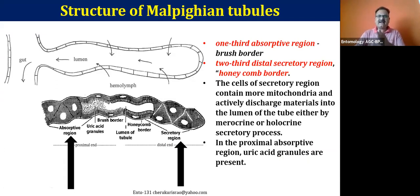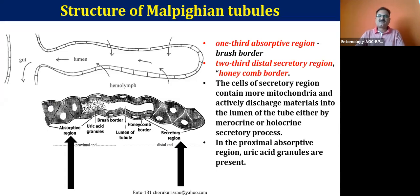We can divide the Malpighian tubules into two regions: the distal secretory region and the proximal absorptive region. The absorptive region is about one-third of the total length and has a brush border. You can see uric acid granules here. The distal part is called the secretory region. The secretory region epithelial cells have more mitochondria and a lot of secretory activity. The inside plasma membrane is very highly folded, and that is called the honeycomb border.